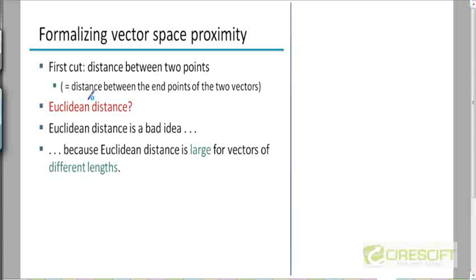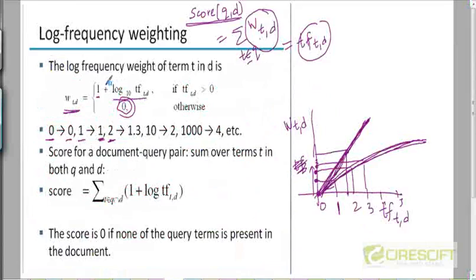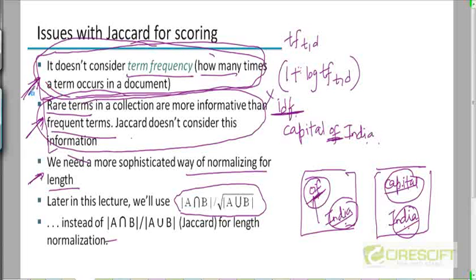So the question is: how do we define the distance between a query and a document here? One of the ways to define the distance is to just take the actual Euclidean distance between the two points — the query point and the document point in this space. However, the Euclidean distance is actually a bad idea, because if you go back to these three problems, we have resolved two of them by coming up with TF-IDF weights and representing each document as a vector of TF-IDF weights. But we haven't resolved the third problem yet, and that's what you will see when we look at the Euclidean distance.